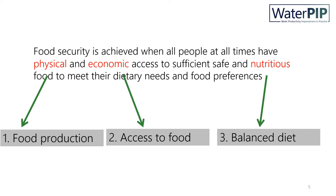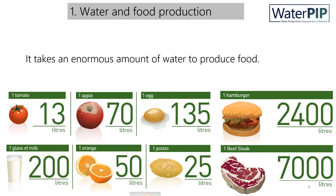All three elements are linked to water in a different way. Let's look first at the link between water and food production. It takes an enormous amount of water to produce food. This slide shows the so-called water footprint of different food products. For example, a tomato takes about 13 litres to produce, one potato takes about 25 litres, and a beefsteak takes about 7,000 litres — from the cow to a beefsteak, some 7,000 litres of water are evaporated.